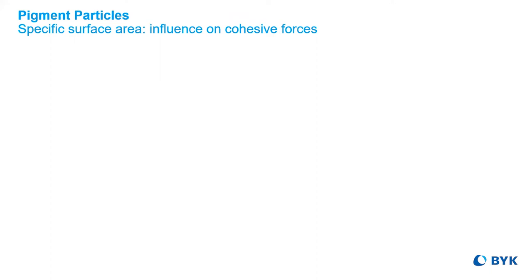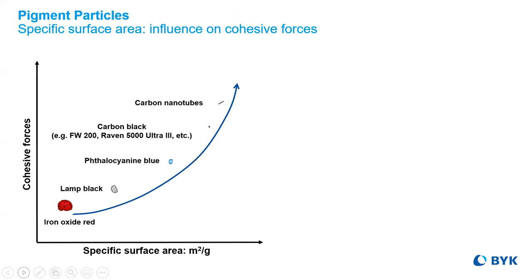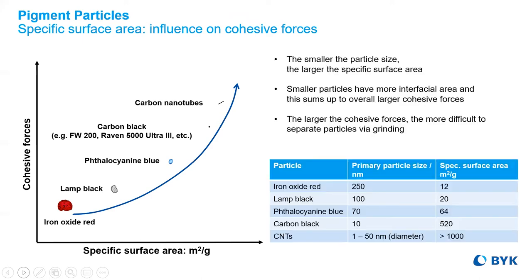Pigments have a variety of sizes and surface areas. The cohesive forces, plus the desire to remain in a low-energy state, causes them to agglomerate. A general rule of thumb: the smaller the pigment particle, the greater the interfacial tension to remain in an agglomerated state. While wetting and dispersing additives are a must for small particles like carbon black and organics, we certainly see benefits for use in larger size pigments as well.